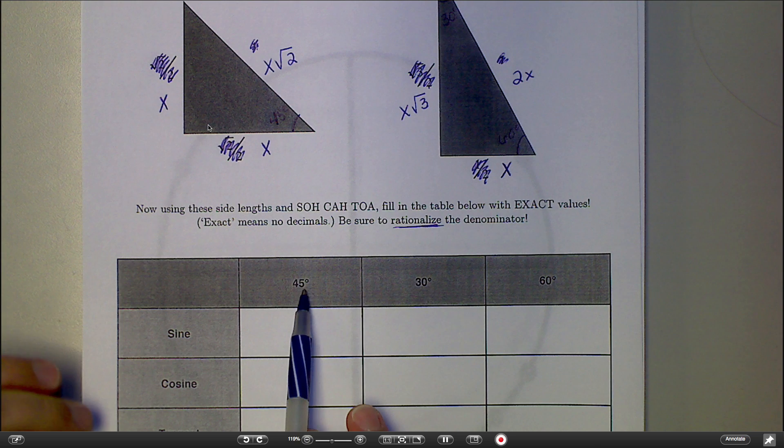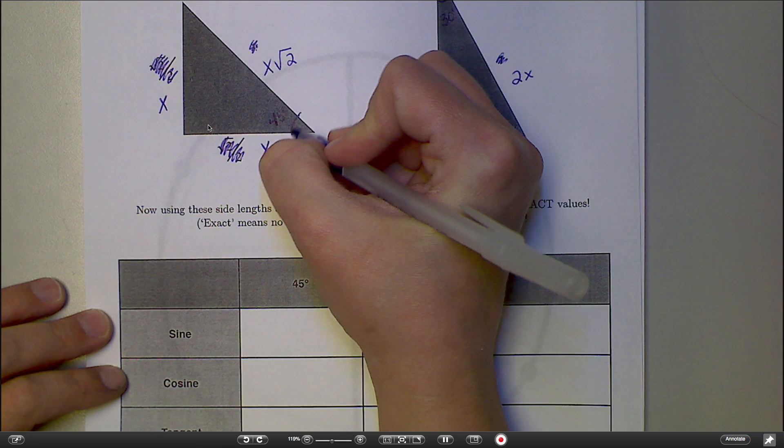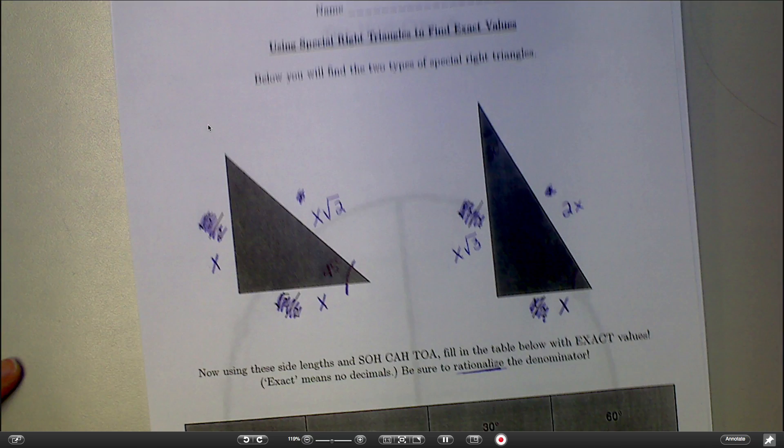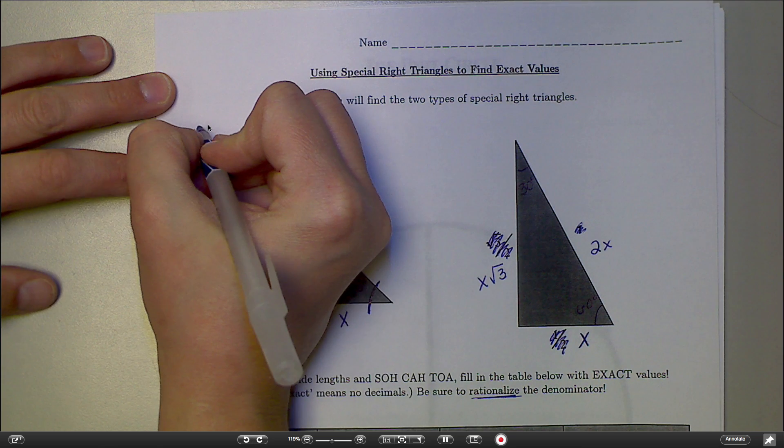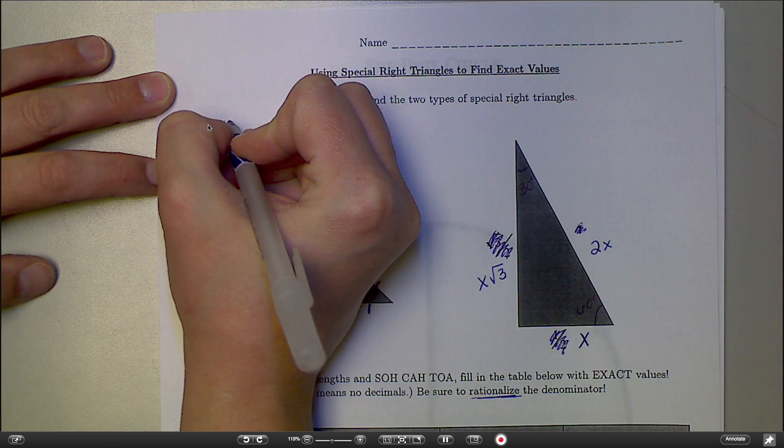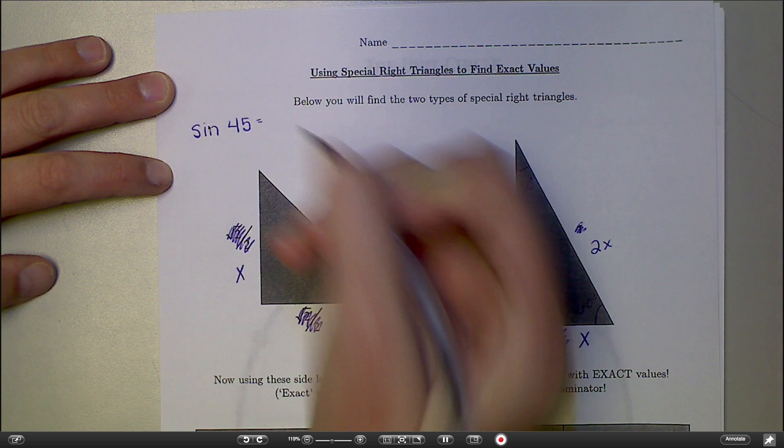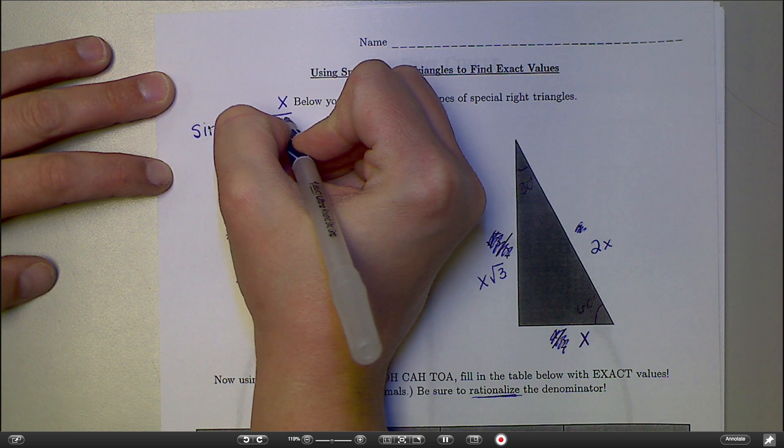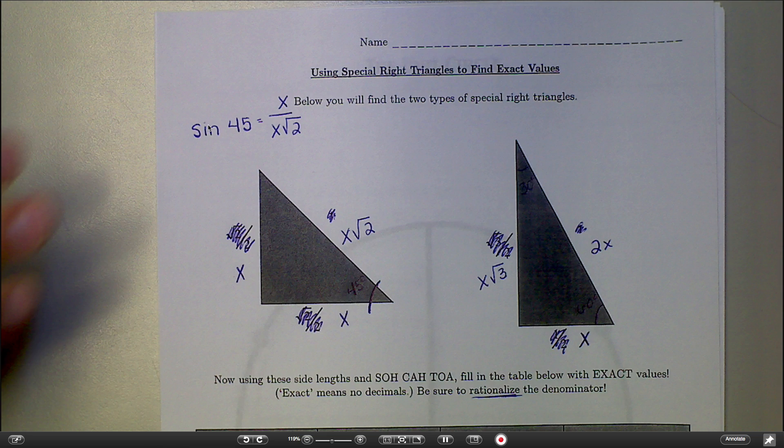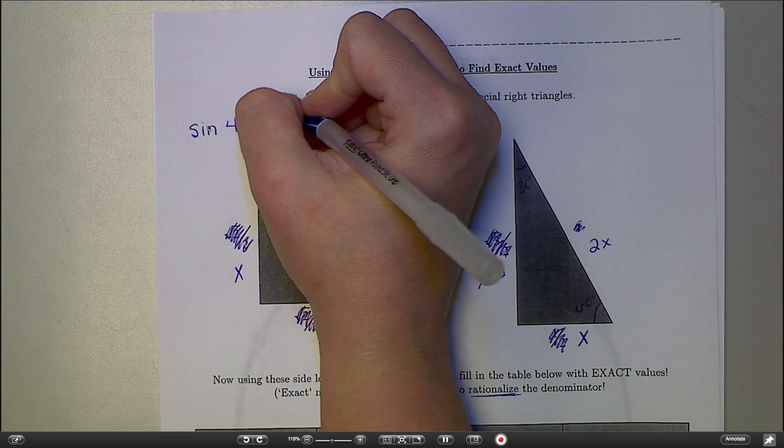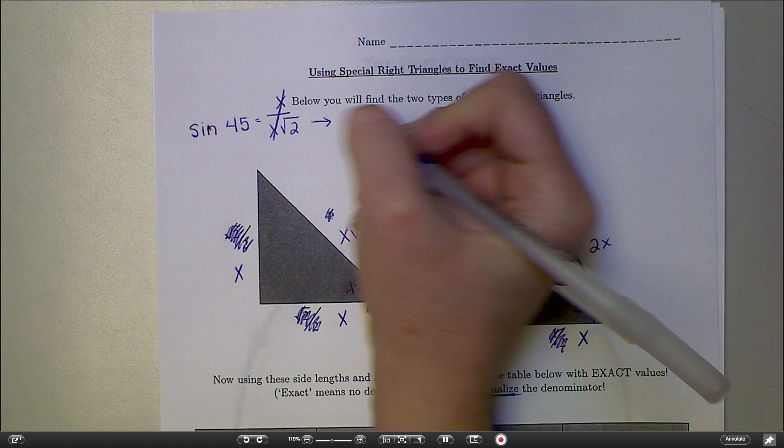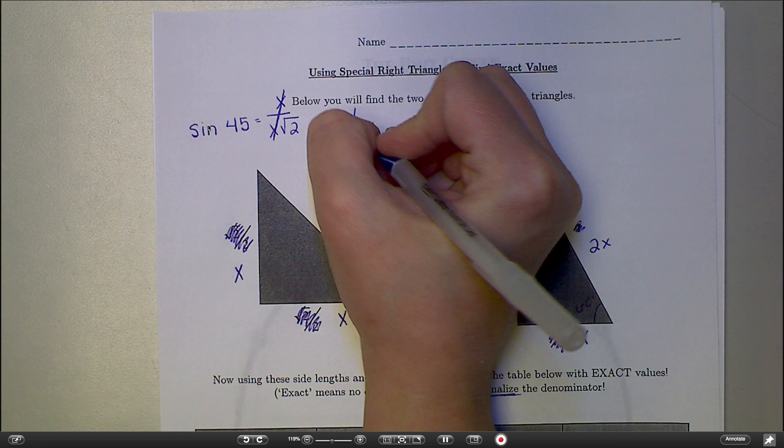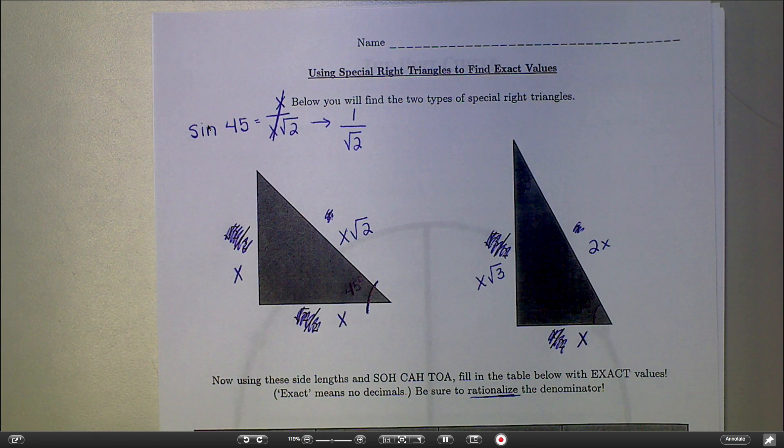For example, sine of 45. Here's my 45-degree angle, and I know that sine is opposite over hypotenuse. So sine of 45 would be opposite over hypotenuse, which is X over X square root of 2. What's going to happen there is your X's are going to cancel. That leaves you with, if there's nothing left on the top, as a space holder, I'm going to put a 1 over the square root of 2. And I'd love for that to be my answer.